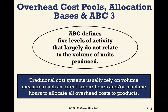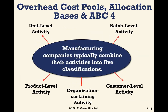Traditional cost systems rely on volume measures such as direct labour hours and machine hours to allocate all overhead costs to products. Under activity-based costing, five levels of activity are defined that largely do not relate to the volume of products produced. Manufacturing companies typically combine activities into five classifications: unit-level activities, batch-level activities, product-level activities, organization-sustaining activities, and customer-level activities.